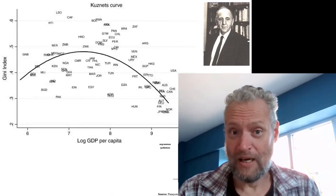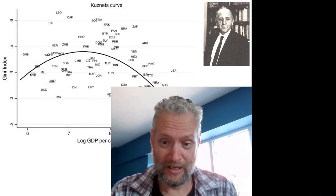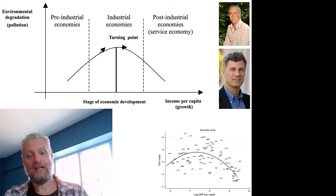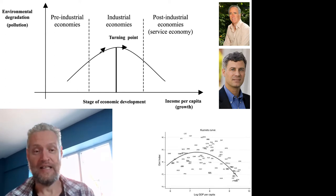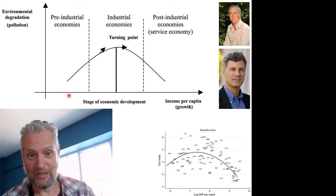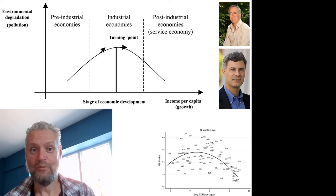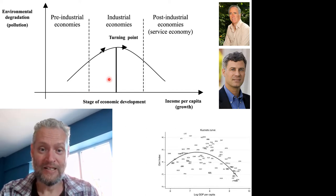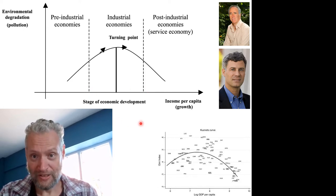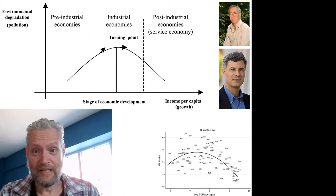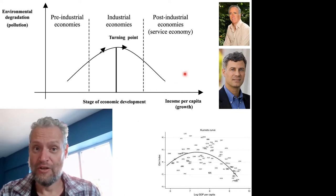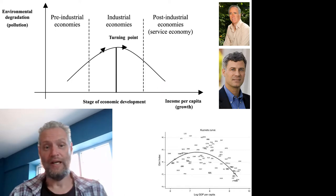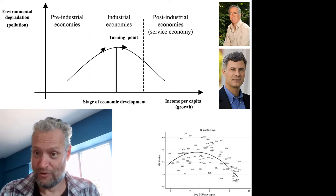And this would apply to environmental issues as well, and the reasoning is as follows. Subsistence economies are largely agriculture and put very little pressure on the environment. Then as economies start to industrialize, they put more and more pressure on the environment, but as they then shift to a service economy, the pressure on the environment starts falling again. So that is the theory.